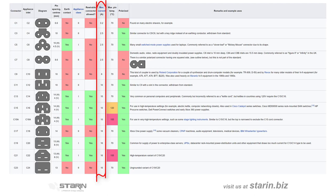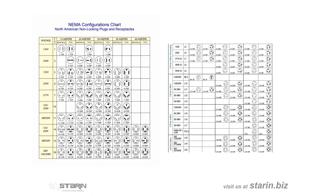Moving over to the NEMA connections, there are a lot of them. In Pro-AV we typically will only have to concern ourselves with a few. If you also install stage lighting, you might need to familiarize yourself with those beginning with L. These connections are locking, or as we typically call them, twist lock.